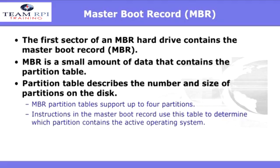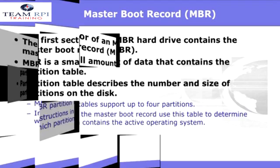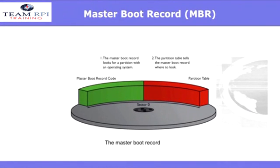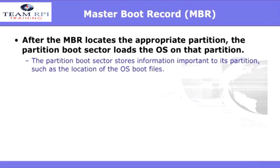The first sector of a hard drive contains the master boot record. The master boot record is a small amount of data that contains the partition table. Instructions in the master boot record use the table to determine which partition contains the active operating system. Here you see the three basic parts: the sector itself, the master boot record code, and then the partition table. After the master boot record locates the appropriate partition, the partition boot sector loads the operating system on that partition.